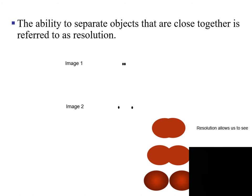The ability to separate objects that are close together is referred to as resolution. In this image, we have two dots that are very close together, labeled image one. Image two has those dots further apart. If you were at the back of the classroom about 30 feet away from the projector screen, it would be hard to distinguish that image one is two dots. But if you're close to the projector screen, you would be able to distinguish that the two circles are separated. The microscope helps to resolve these two dots as being separate dots.